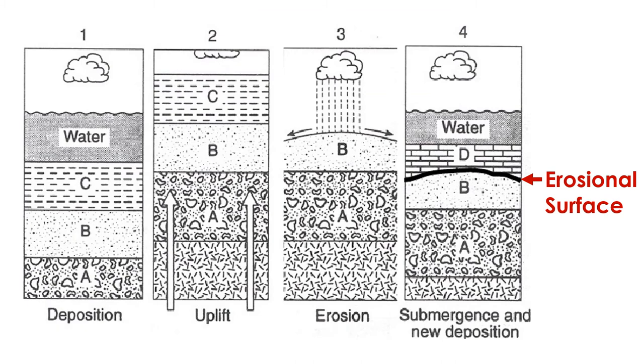This image shows you the sequence of events leading to the formation of an erosional surface. Let's walk through it together. At time 1, there is deposition of strata, layers A, B, and C. These layers are deposited underwater through sedimentation in the ocean.